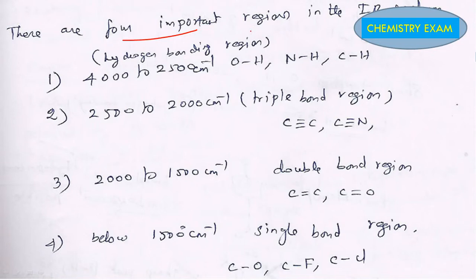Next, we can remember this point also: there are four important regions in the IR spectrum. First, hydrogen bonding region like functional groups OH, NH, CH present from 4000 to 2500 cm^-1. And triple bond like groups C≡C, C≡N are present from 2500 to 2000 cm^-1.